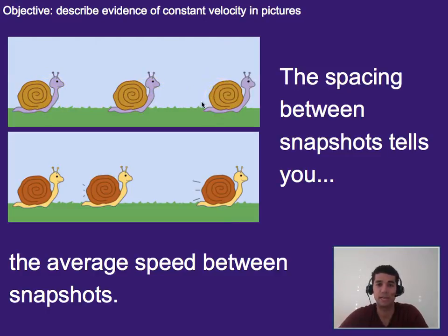In this top photo the spacing is staying the same. Versus down here, in this yellow snail picture, the spacing is changing, and therefore the average speed or average velocity would be changing.